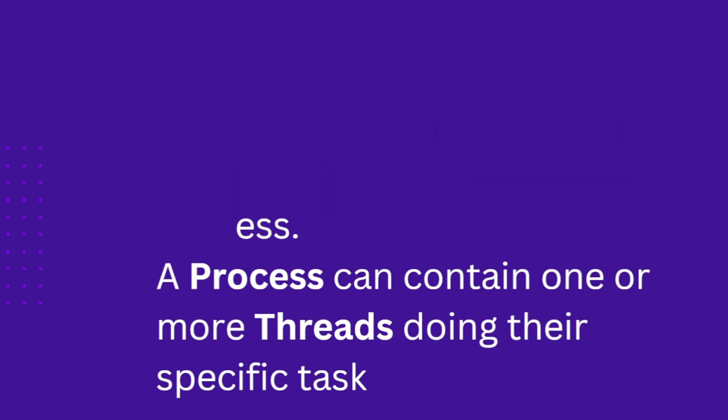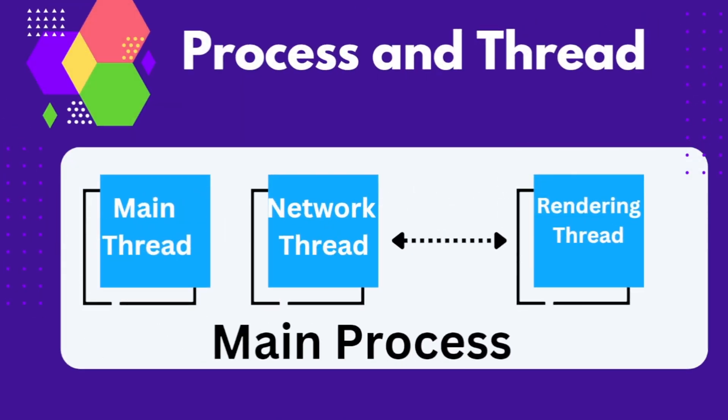Inside a process we can have multiple threads running. We have the main thread that oversees everything and handles the other threads and tasks as well. Then we have the network thread — it manages downloading and uploading data and makes sure that the website is loading properly. Then we also have the rendering thread, which takes care of showing or rendering the images, text, and buttons on the screen so that you can see the web page properly. There can be many more such threads running to keep Chrome browser working as expected, and all of these are running in a single main process.